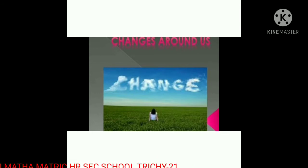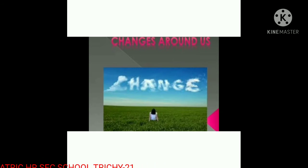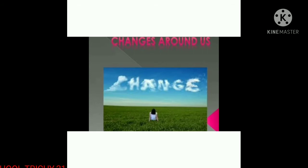We see changes like day and night, summer and winter, and so on. We also see changes in objects. For example, growth of a tree, ripening of fruits, falling of leaves are some of the changes taking place around us.